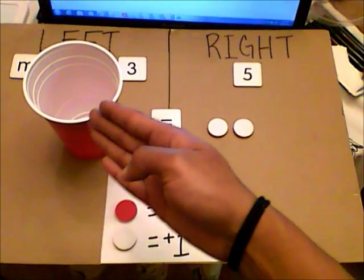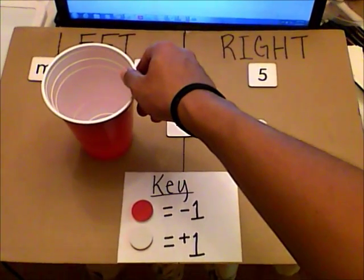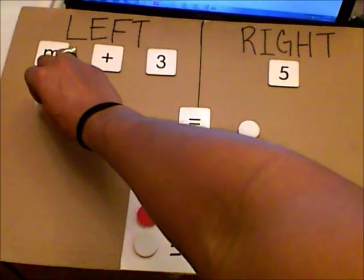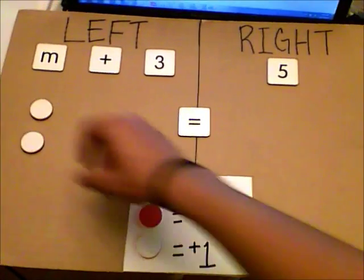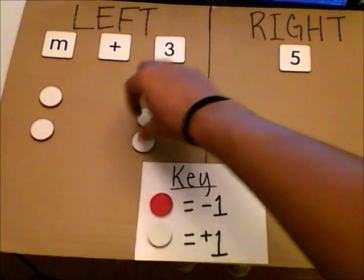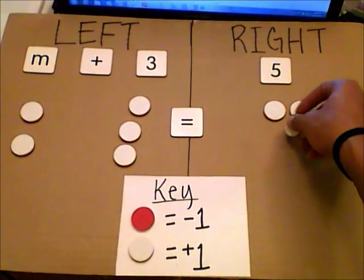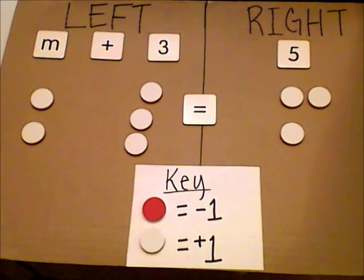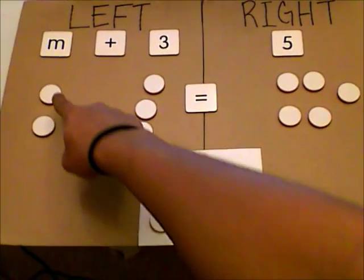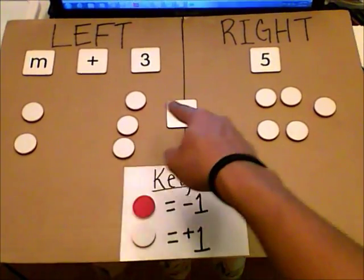We solved the equation — m equals 2. Let's check it by replacing m with 2. I'll put 2 counters for m and the original 3 back on the left, and 5 on the right. So m plus 3 equals 5, and 2 plus 3 equals 5. We're correct.